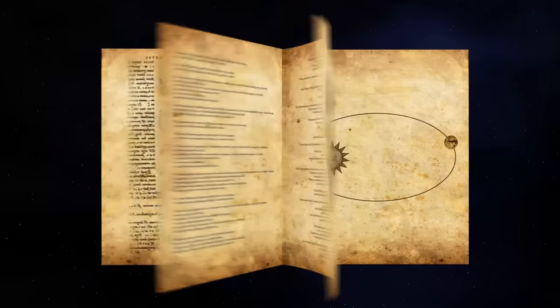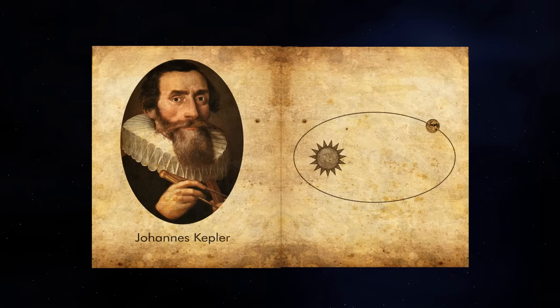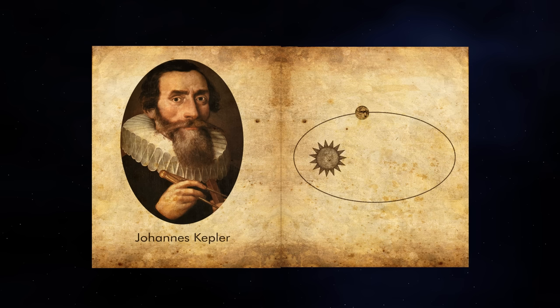In 1609, he published the first two laws in a book called Astronomia Nova, which focused on the movements of the planet Mars. Mars was something of a conundrum. Its observed motions didn't match any of the proposed models of the solar system, which involved circular orbits.